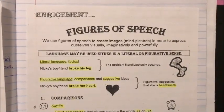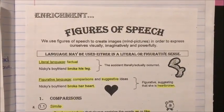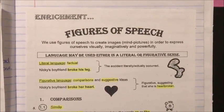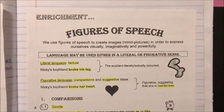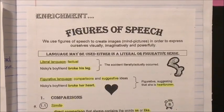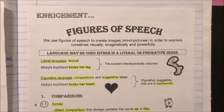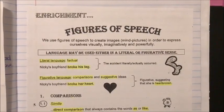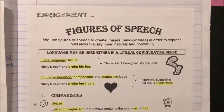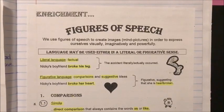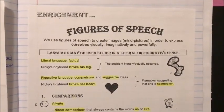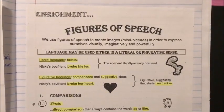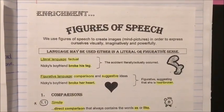Literal language is factual. For example: Nikkie's boyfriend broke his leg — it actually happened, the leg is broken. But if we speak about figurative language, we have comparisons and suggestive ideas. So: Nikkie's boyfriend broke her heart — it's figurative, suggesting that she's heartbroken. Her heart is not physically broken; it's just an emotion that she's feeling.